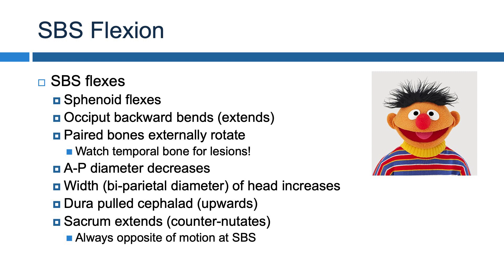The final sequelae of SBS flexion involves the sacrum and the dural attachments to it. The dura is going to be pulled cephalad, or upwards, towards the head. Since the dura is attached to the anterior portion of the sacrum, this pulls the sacrum up and makes it rotate backwards, or extend — also referred to as counter-nutation. You can simply remember that sacral motion is always going to be opposite the motion that occurs at the SBS: when the SBS flexes, the sacrum extends, and vice versa.